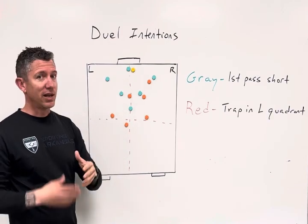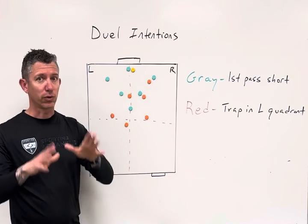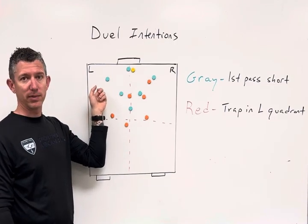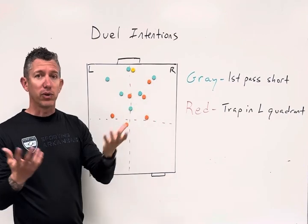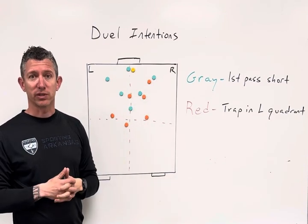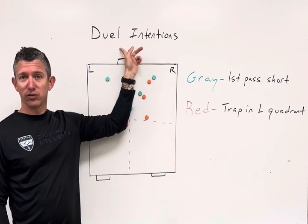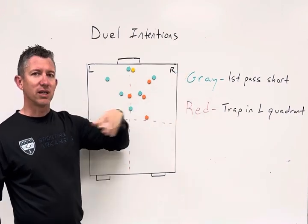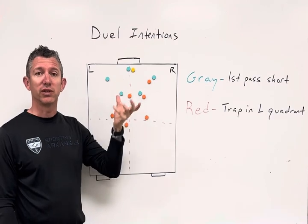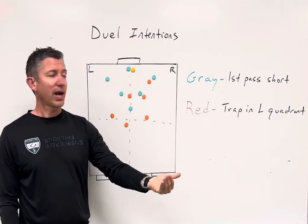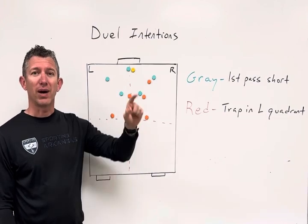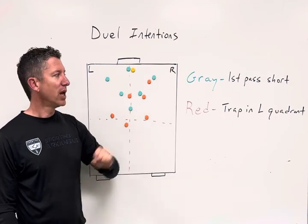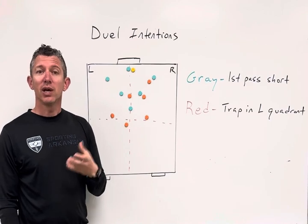Meanwhile, Gray knows they have to play short, but they don't know what Red is going to do — they don't know Red is specifically intending to trap in the left quadrant. They have to play as if it's a real game, not knowing the other team's restrictions. By using dual intentions — the two opposing views — each team plays with a specific intention relevant to what they're working on: Blue trying to build out of the back, Red trying to press high and trap in that attacking third. But by not knowing exactly what the other is doing, it creates a more realistic gameplay scenario.